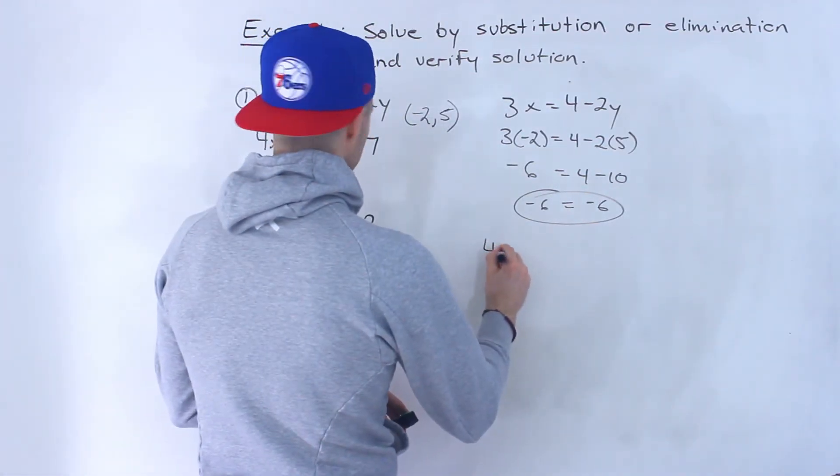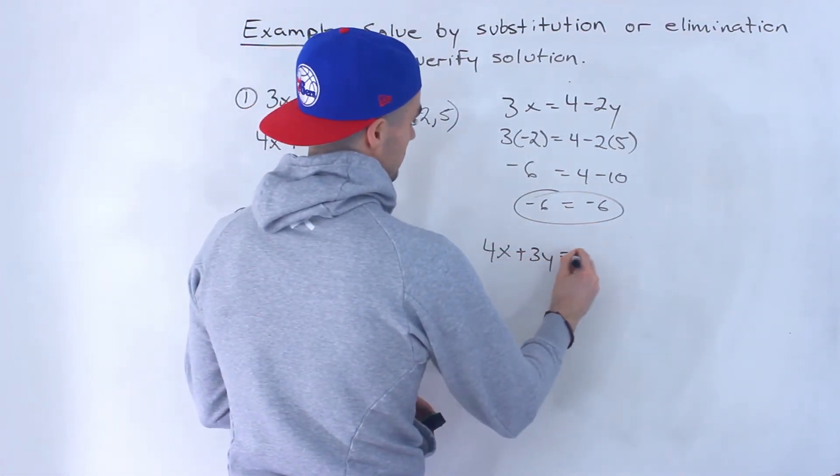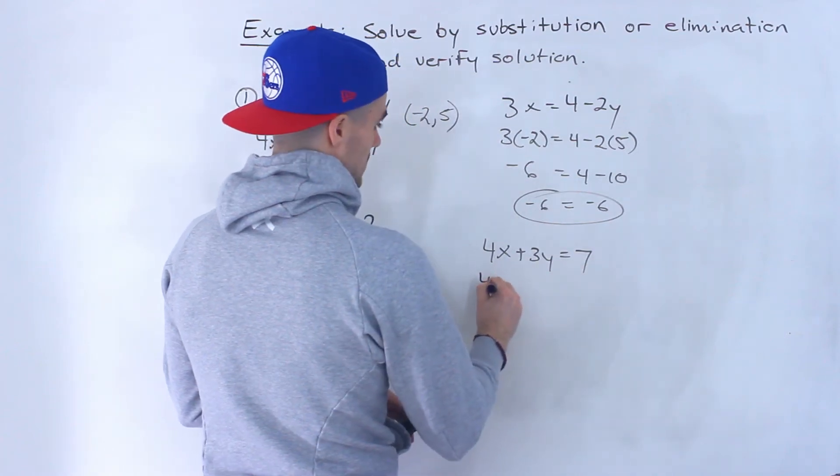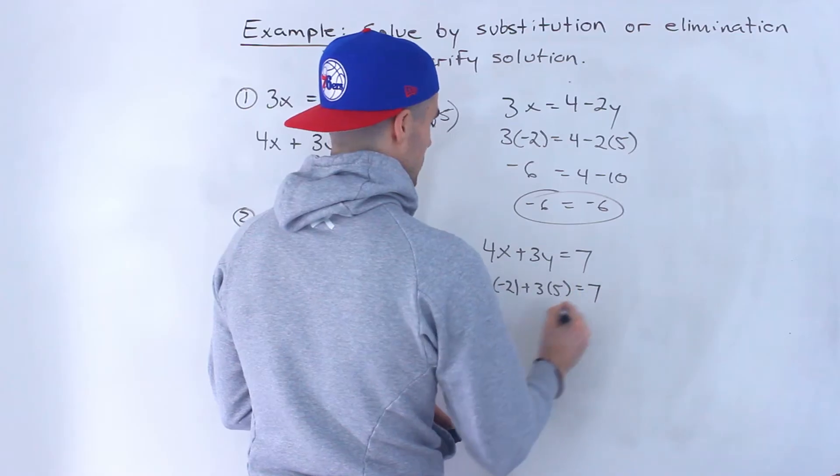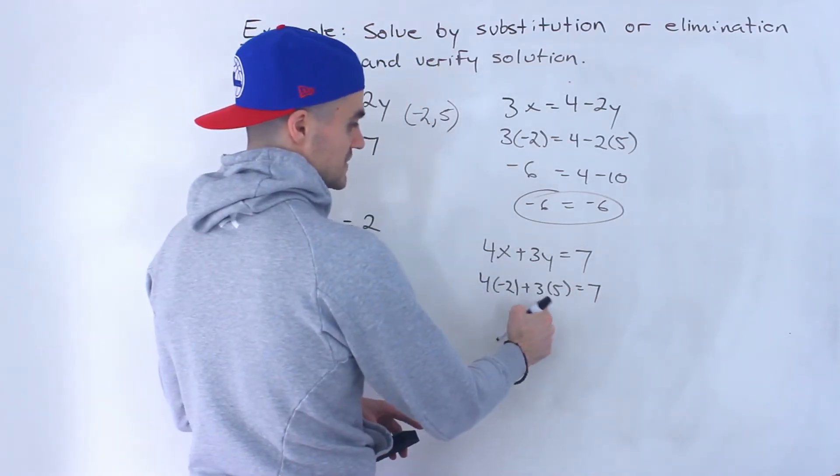And then this one, 4x plus 3y equals 7. 4 times negative 2 plus 3 times 5 equals 7. So this would be negative 8 plus 15.